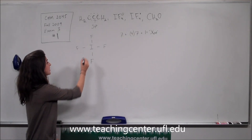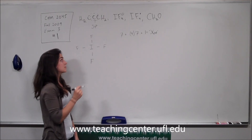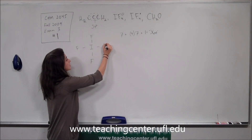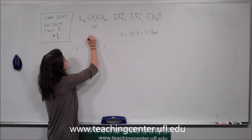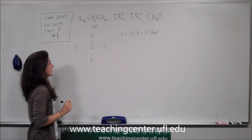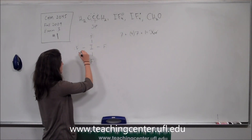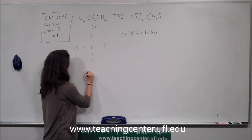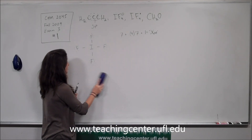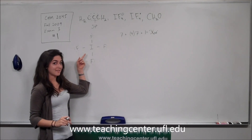That gives us 36 electrons to work with. We have 8 used in our skeleton bonds. The easiest thing to do is complete the octet of all the fluorines, adding 6 electrons to each. After completing all four fluorines, we've used 32 electrons total. That means we have 4 more electrons left. Iodine is not following the octet rule here — it can expand its octet — so we add two lone pairs to iodine.